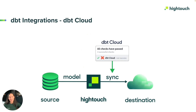Another integration we offer is with dbt Cloud. Rather than scheduling syncs to run on a set interval, you can schedule them to be triggered automatically whenever a dbt Cloud job successfully completes. Relying on dbt Cloud for sync scheduling ensures that Hitech performs syncs into downstream destinations whenever fresh data is available.